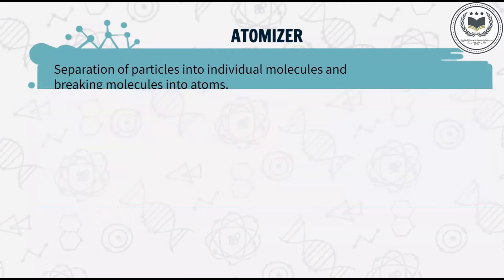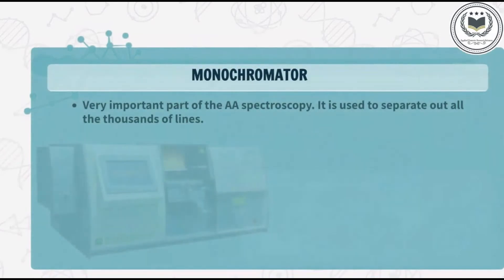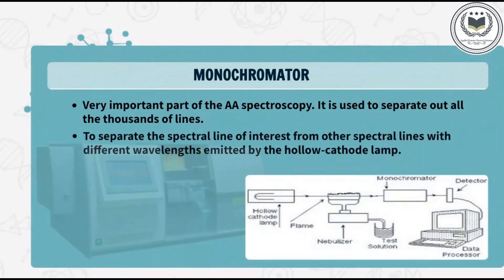The monochromator is a very important part of atomic absorption spectroscopy. It is used to separate out all the thousands of spectral lines. The monochromator is included as an important device in the optical system of an atomic absorption spectrophotometer, and its function is to separate the spectral line of interest from other spectral lines with different wavelengths emitted by the hollow cathode lamp.